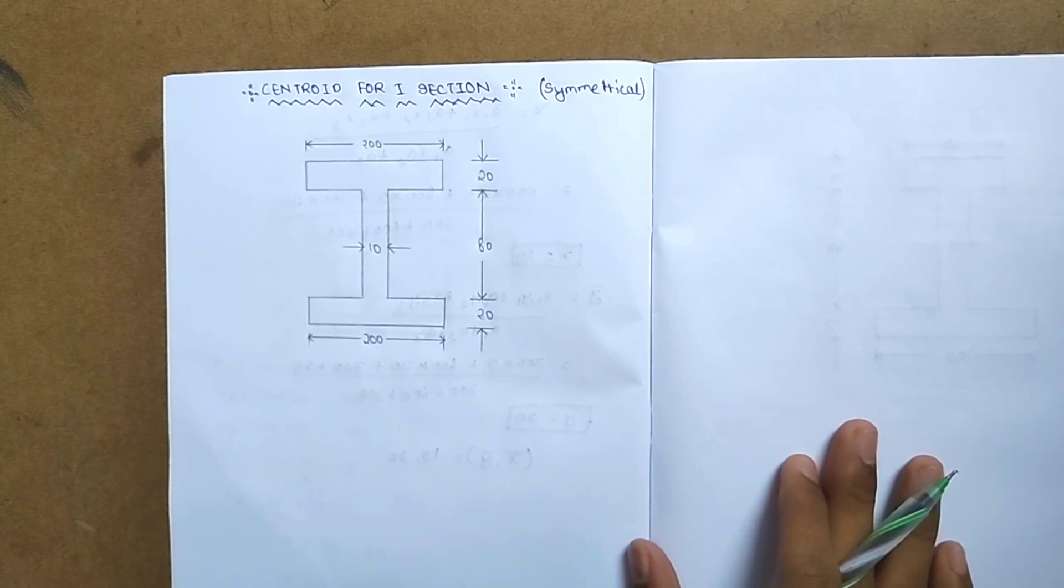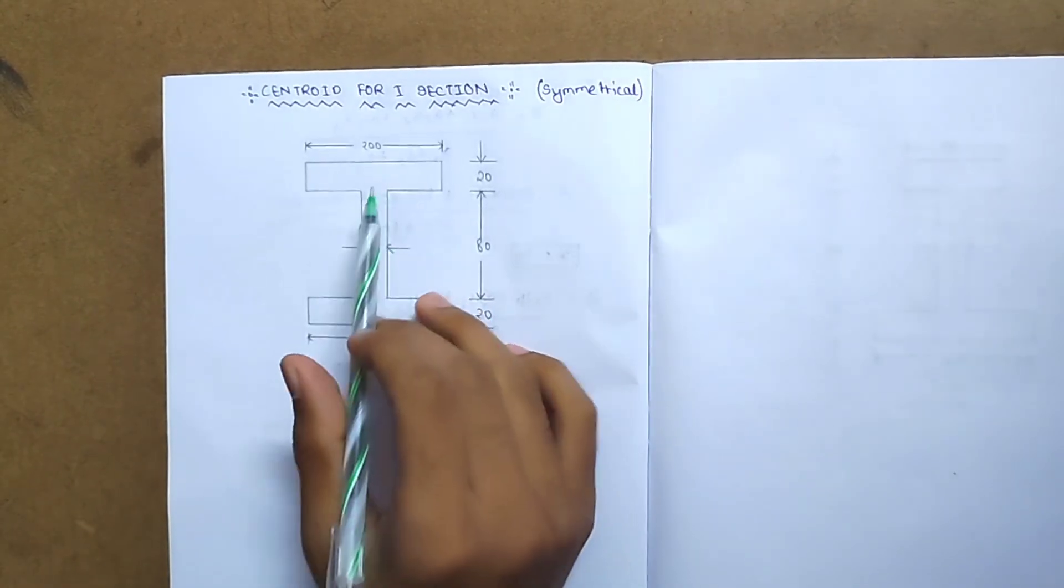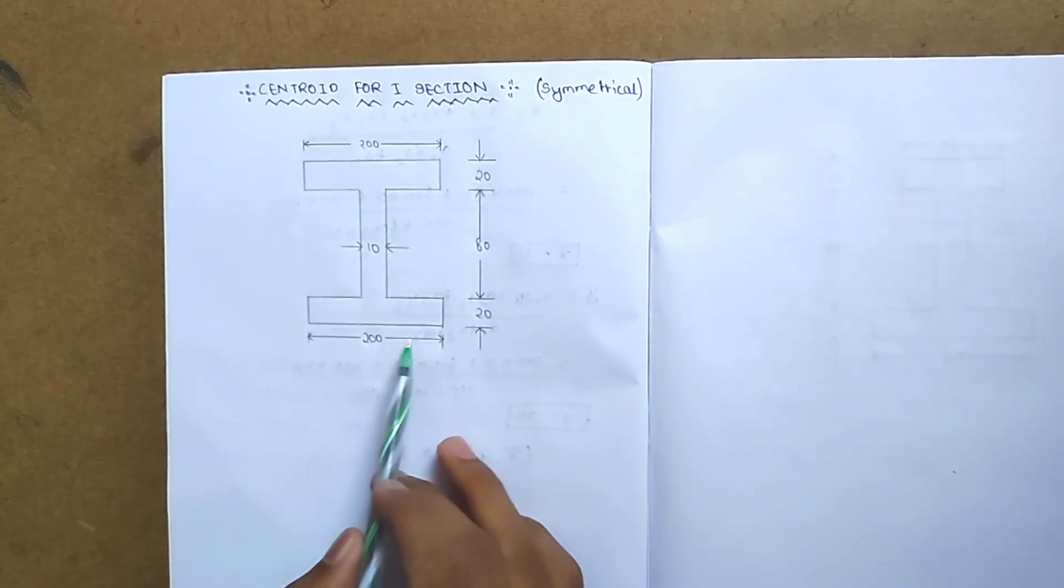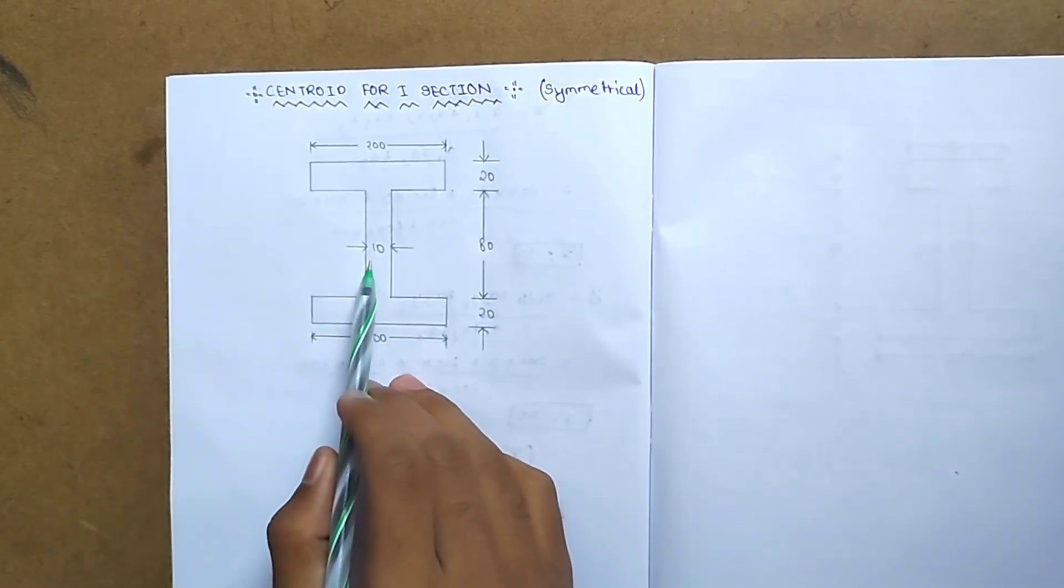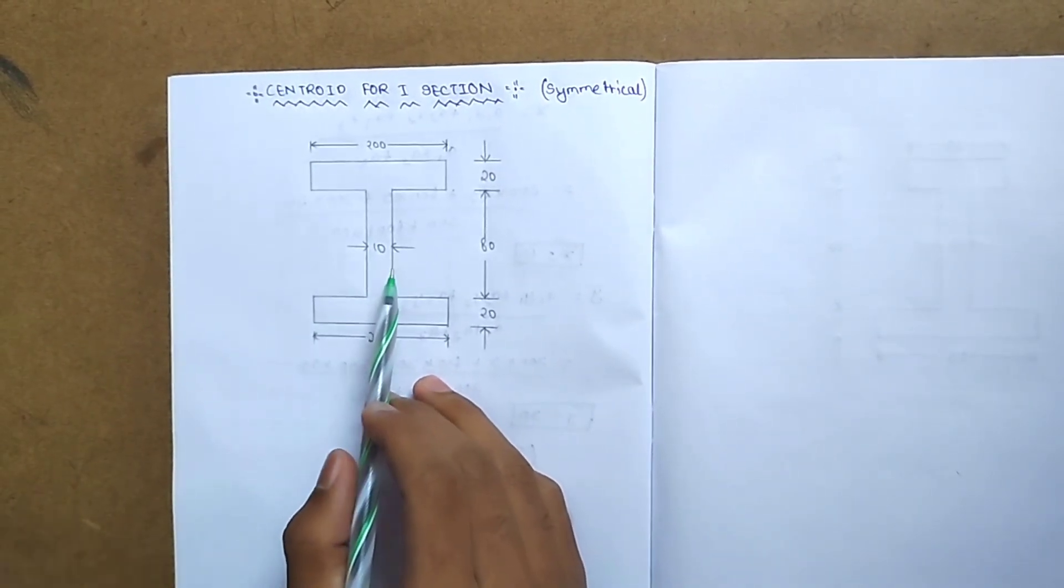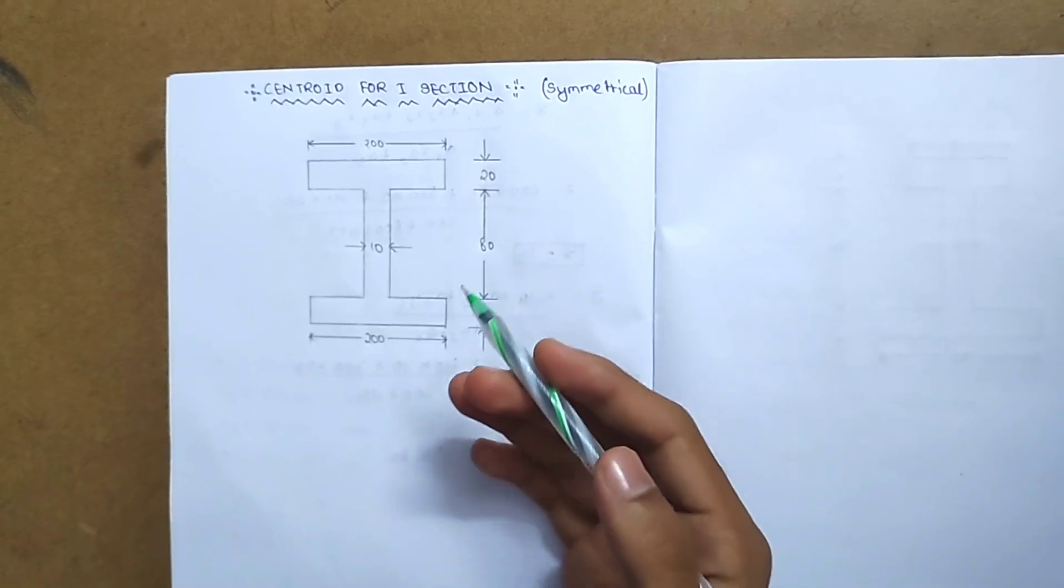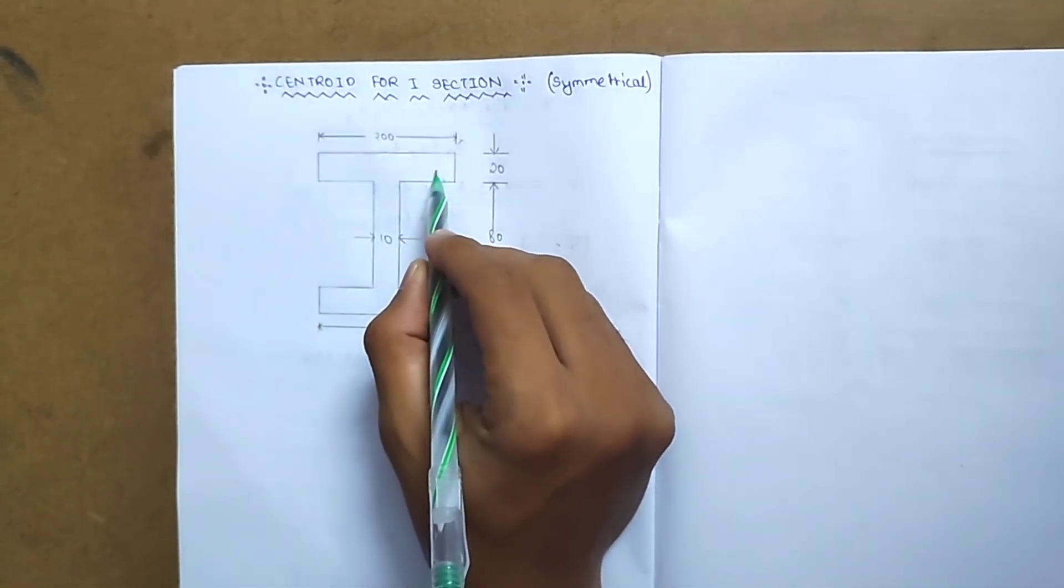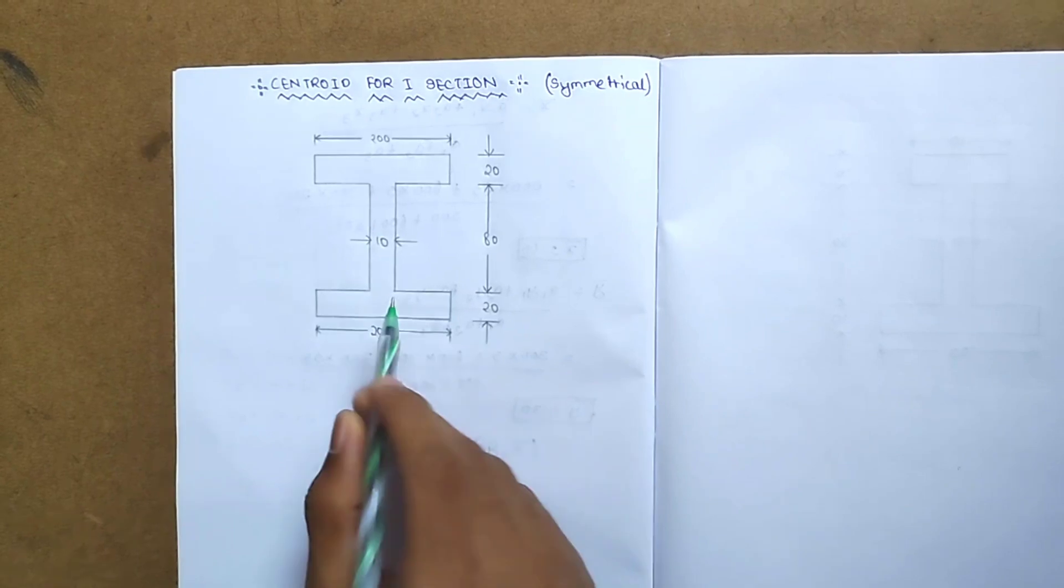In the question, the top flange is 200 into 20, bottom flange is 200 into 20, and web is 10 mm. These are the details for the top flange, bottom flange, and web.